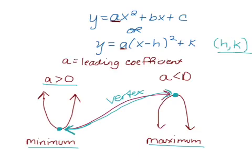If we have an equation that's in standard form, then the way we can find our vertex is: the x-value would be negative b divided by 2a, and then for the y-coordinate we substitute negative b over 2a into our function.